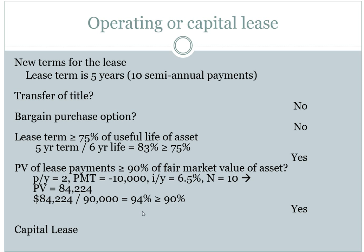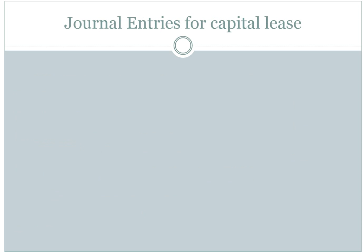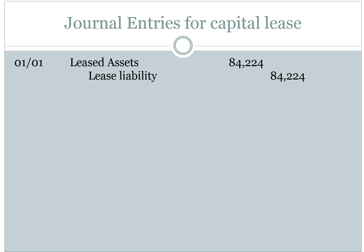So keep that in mind as we go through the journal entries. The first thing is that on January 1st, we recognize the fact that we have leased assets. We're going to debit an asset account — typically called leased assets — and credit lease liability for the smaller of the present value of the lease payments or the fair market value. The present value of the lease payments is $84,224 and the fair market value is $90,000, so we record this at $84,224.